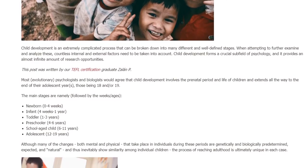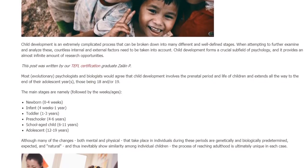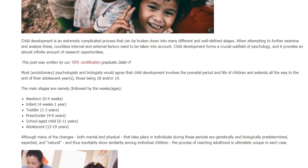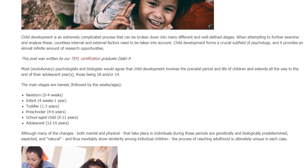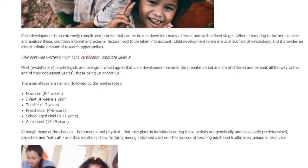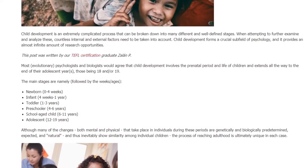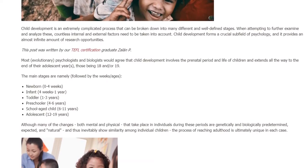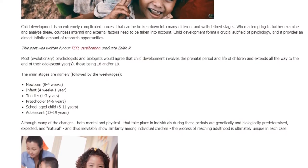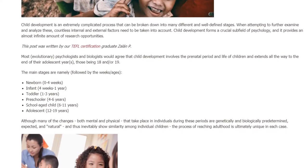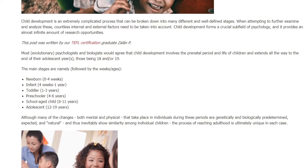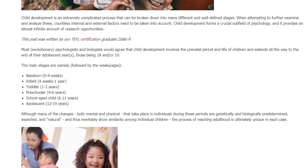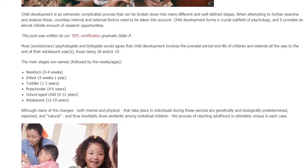Although many of the changes, both mental and physical, that take place in individuals during these periods are genetically and biologically predetermined, expected, and natural — and thus inevitably show similarity among individual children — the process of reaching adulthood is ultimately unique in each case.